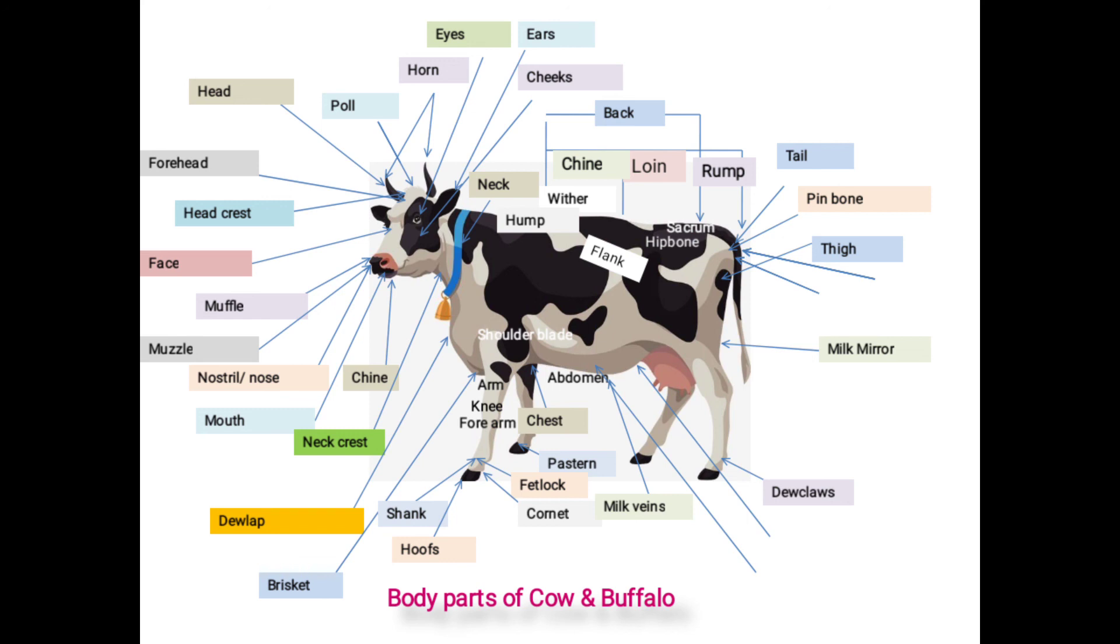Next one is udder, also known as mammary glands. The complete udder has four quarters: front two quarters make fore udder while hind quarters make rear udder. Each quarter extended with tube-like structure known as teats.